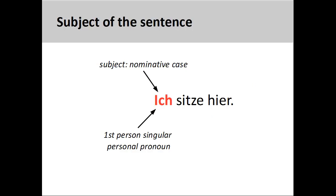In the sentence you see on the screen, 'ich sitze hier' — I am sitting here — the first-person singular personal pronoun 'ich' performs the action of sitting, therefore it is in the nominative case and the subject of the sentence. The adverb 'hier' simply describes the place where the action is being performed.